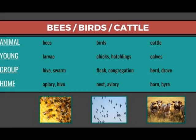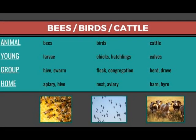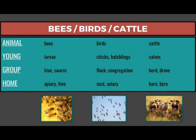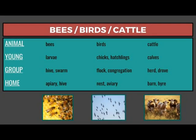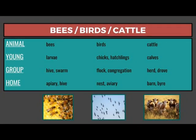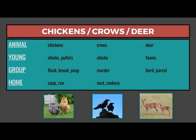The young of cattle are calves. A group of cattle is a herd or drove. The home of cattle is a barn or byre. The young of chickens are chicks or pullets — that is young hens under one year. A group of chickens would be a flock, brood, or peep. The home of chickens would be a coop or a run.